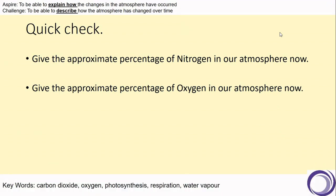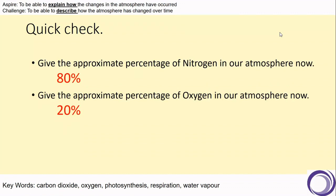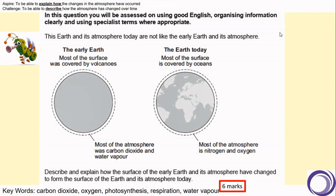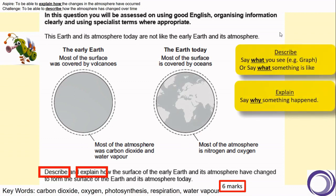What did you get? Did you go for 80% nitrogen and 20% for oxygen? These are commonly asked in exams, so make sure you are familiar with these numbers. Now let's have a look at what this topic would look like on an exam question. On the screen now you can see a six-mark question, so the first thing we are going to do is box the question — let's box those command words.